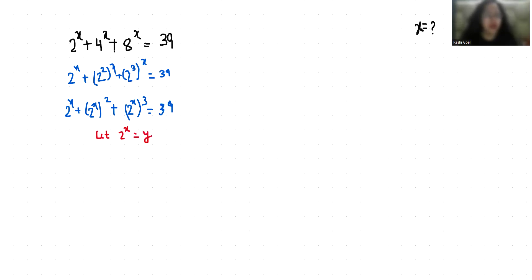So it becomes y + y² + y³ = 39, or you can write it as y³ + y² + y - 39 = 0. So y³ + y² + y - 39 is -27 - 12 = 0.